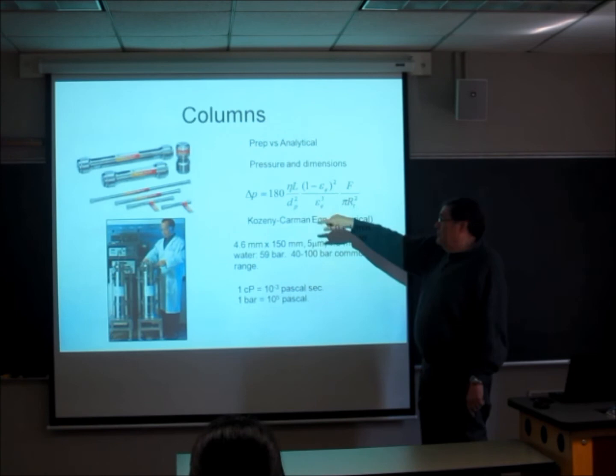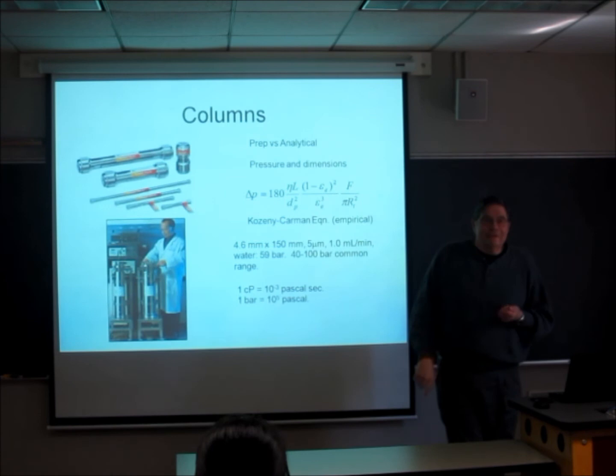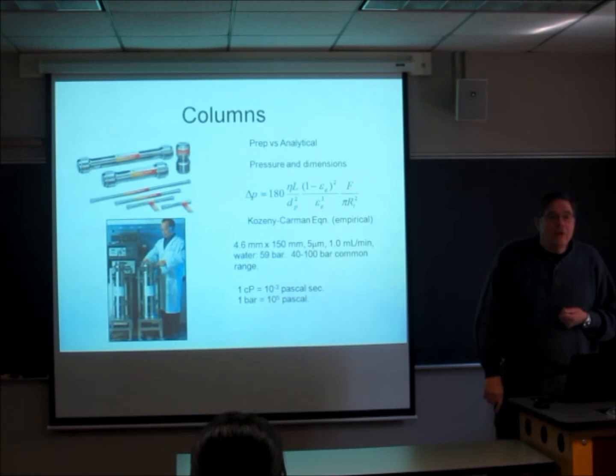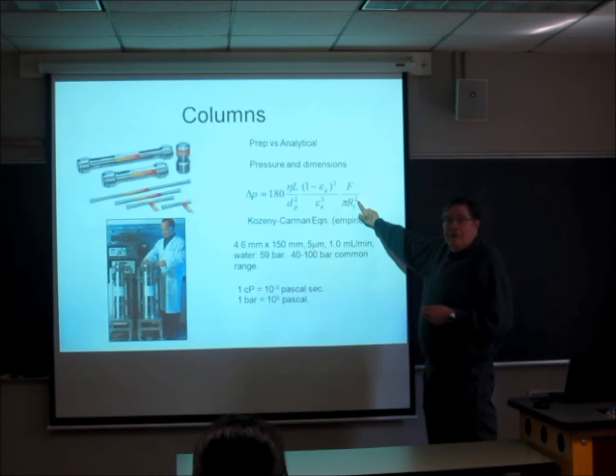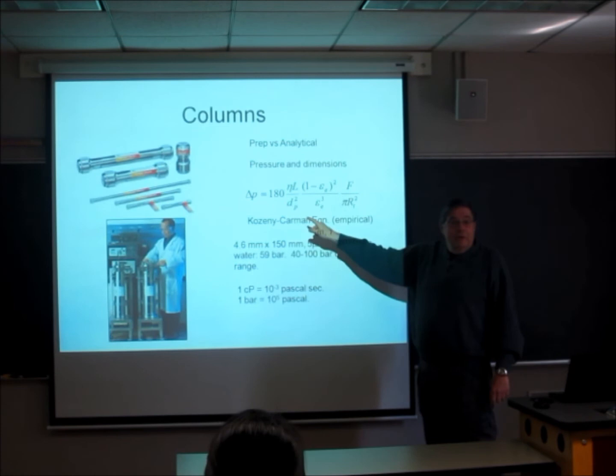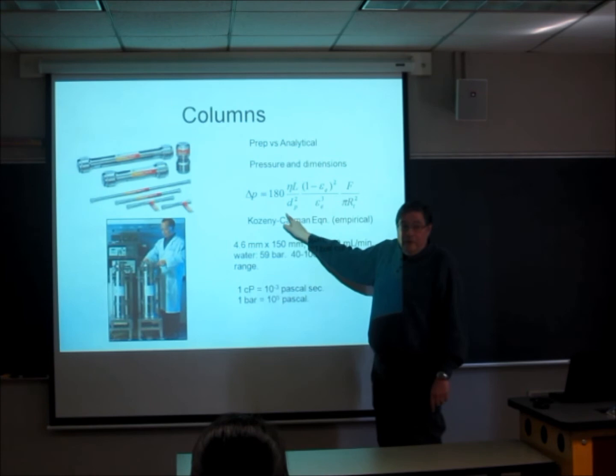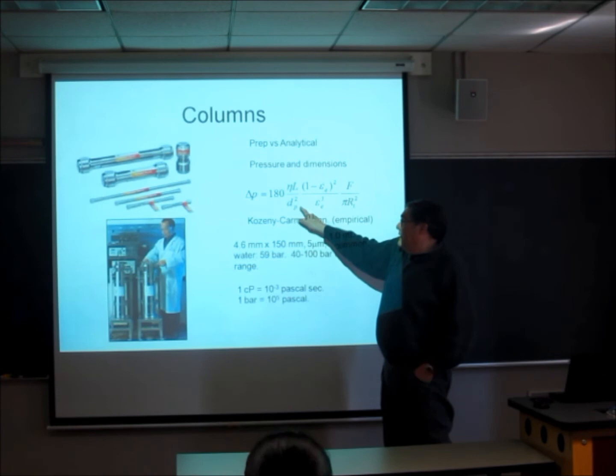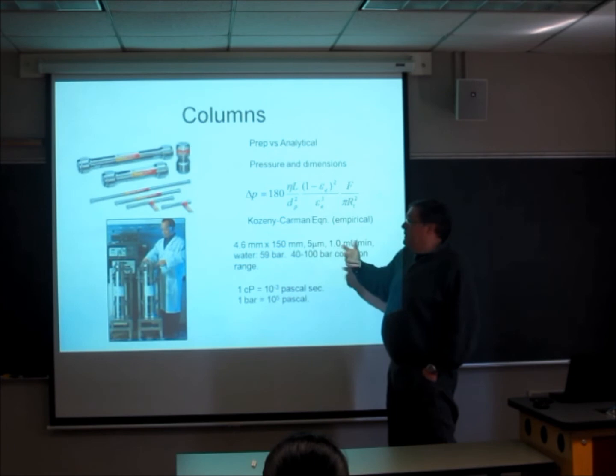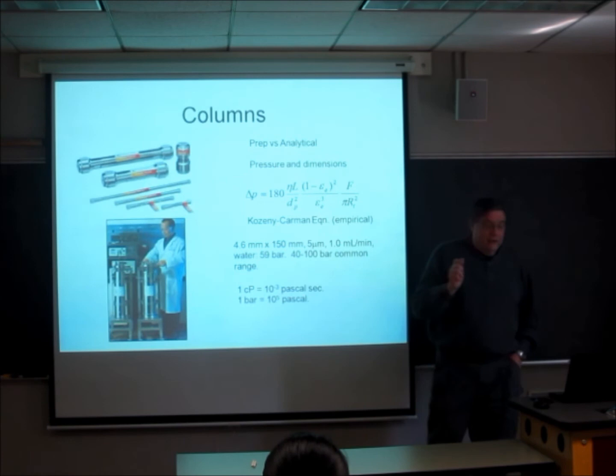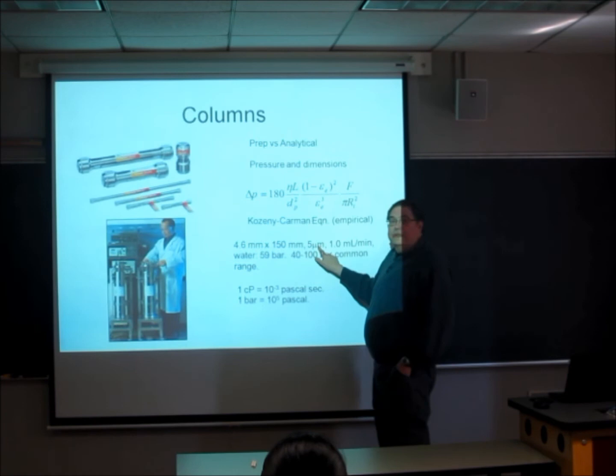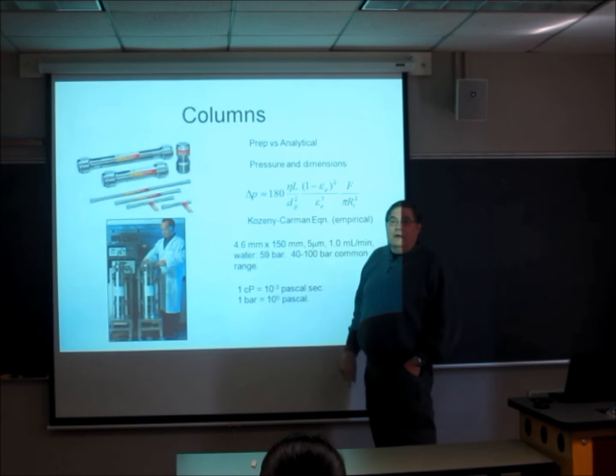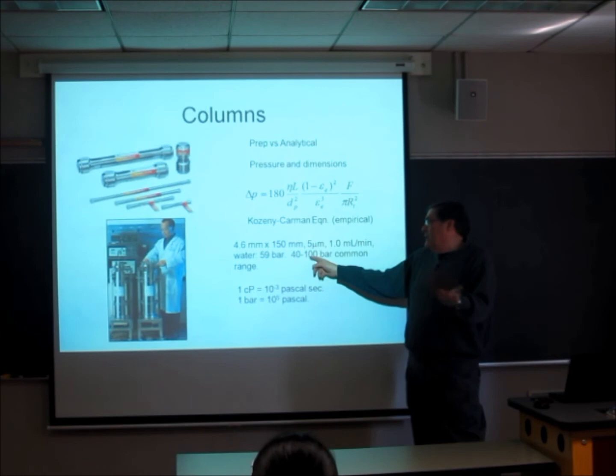Here's the flow rate. You double the flow rate, this is one mil per minute. If you go to two mils per minute, you'll double the pressure drop. Going to two mils a minute, you'd expect to double this for about 120 bars. This is the radius, the internal radius of the column. If we cut that radius in half, that's a quadruple, four times the pressure, because this is the radius squared. This is a very important one, the size of the particle diameter.